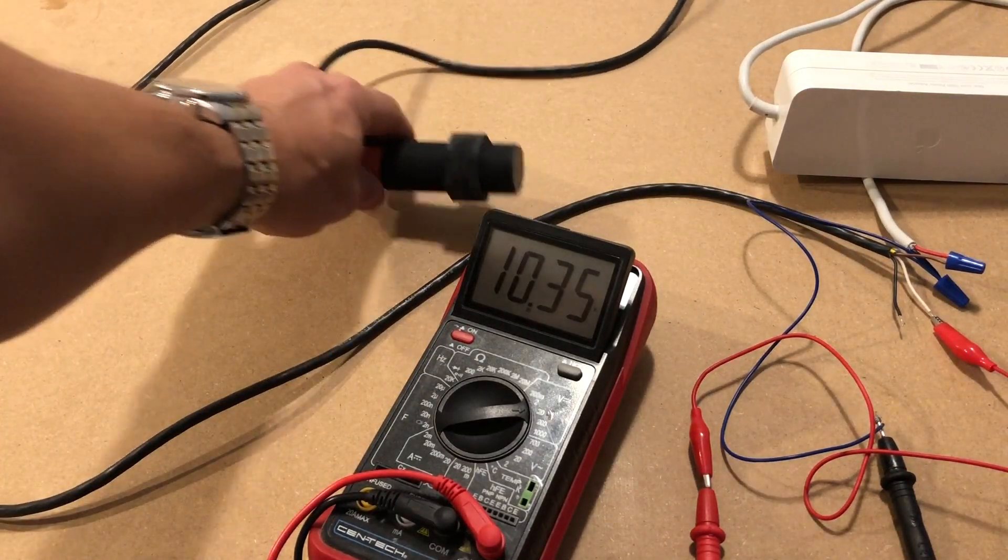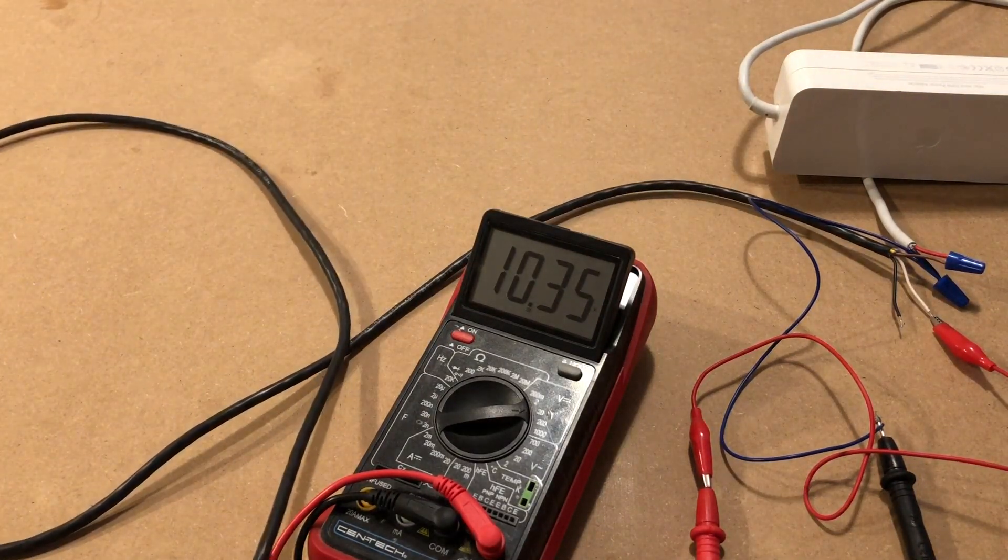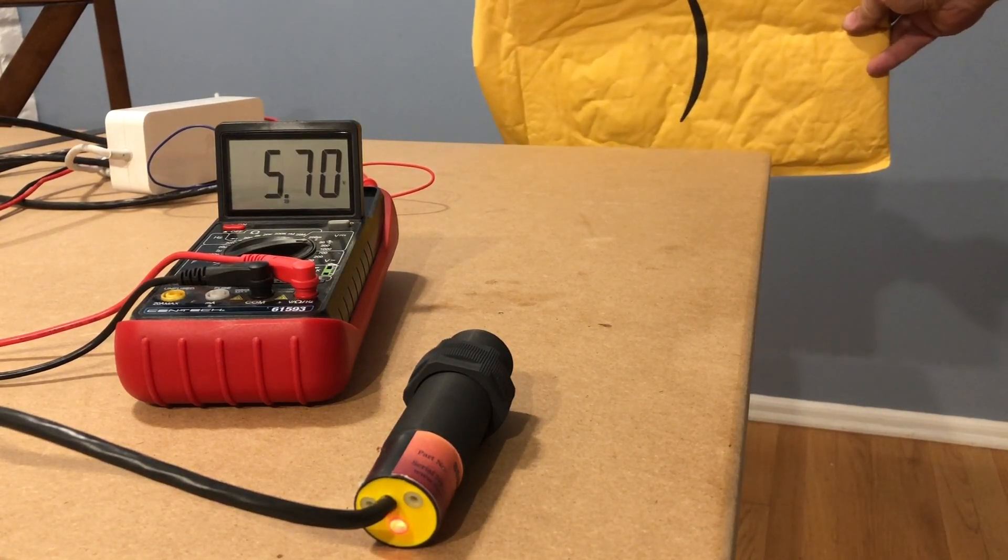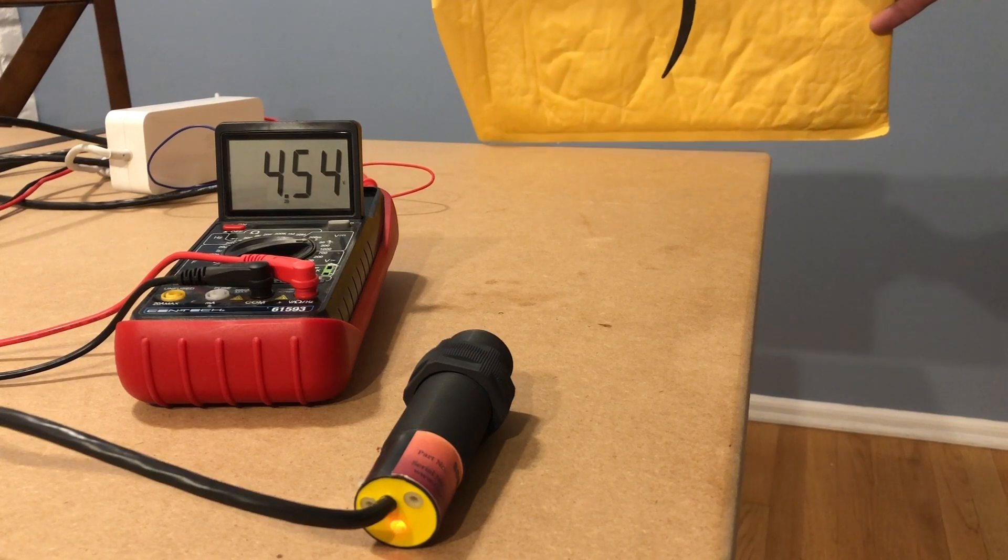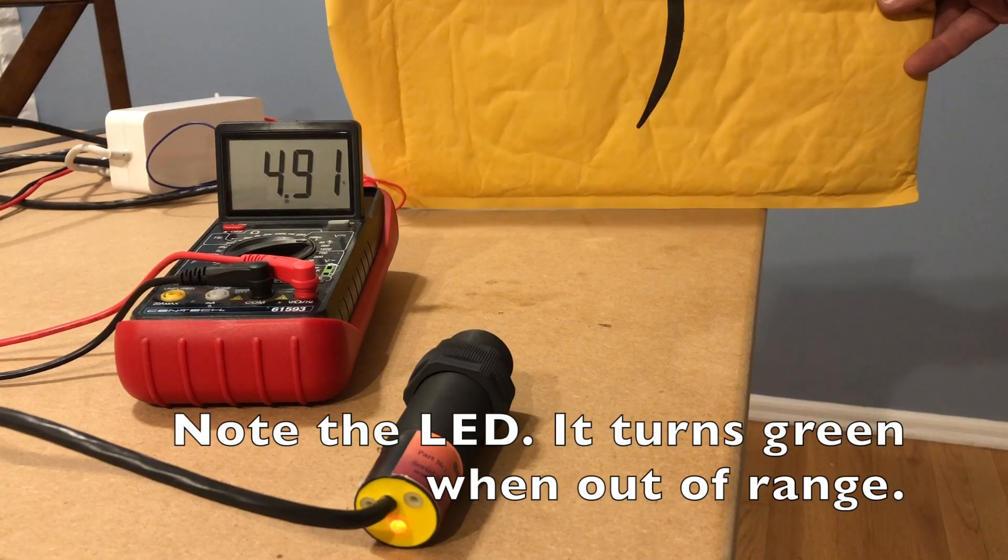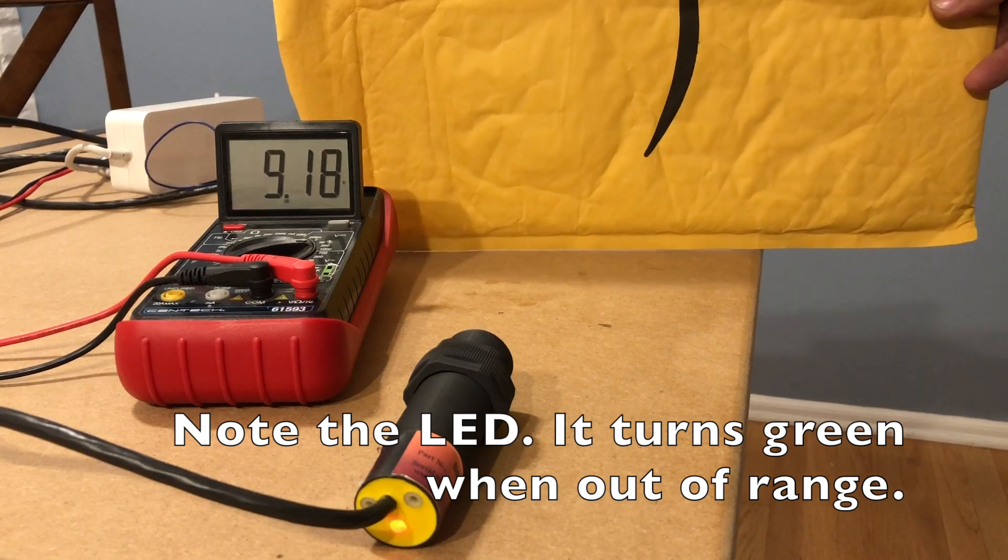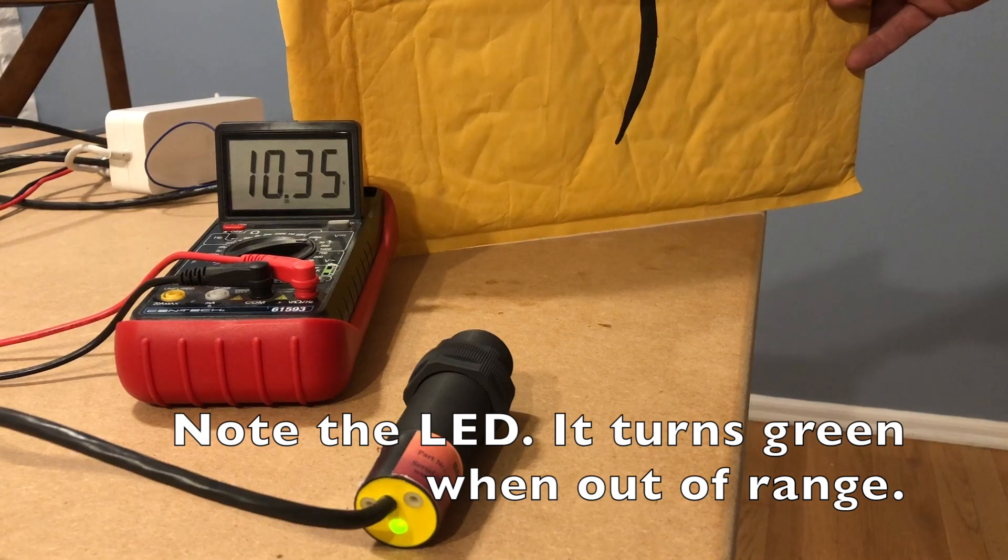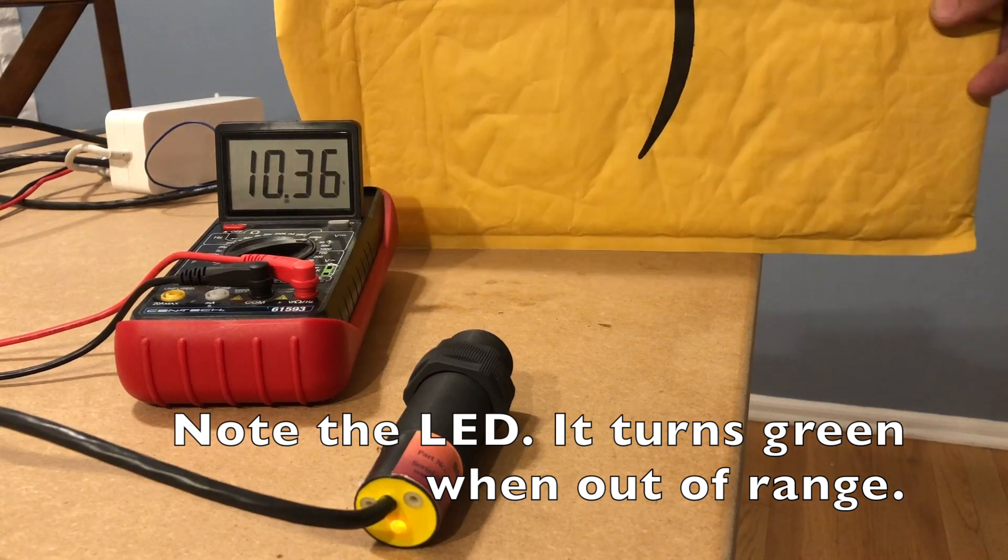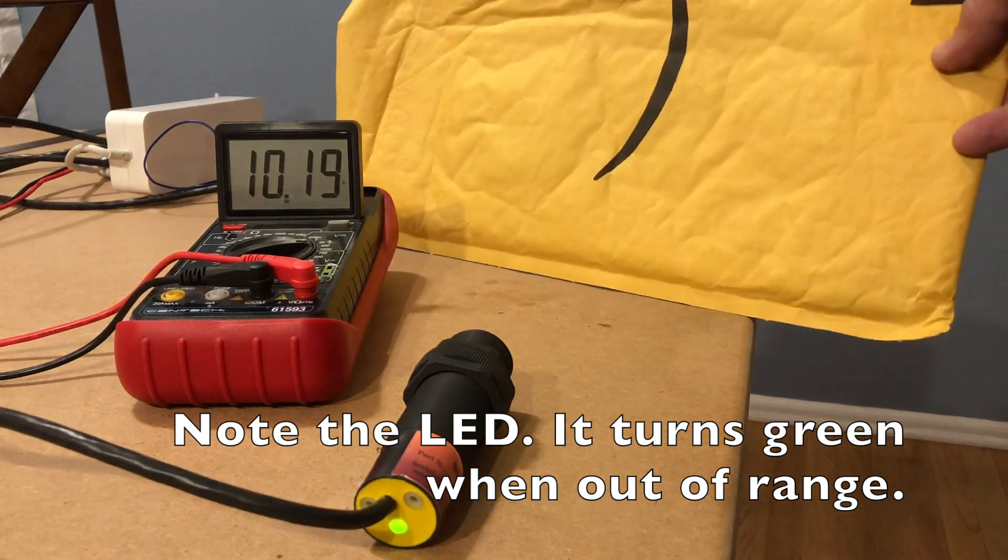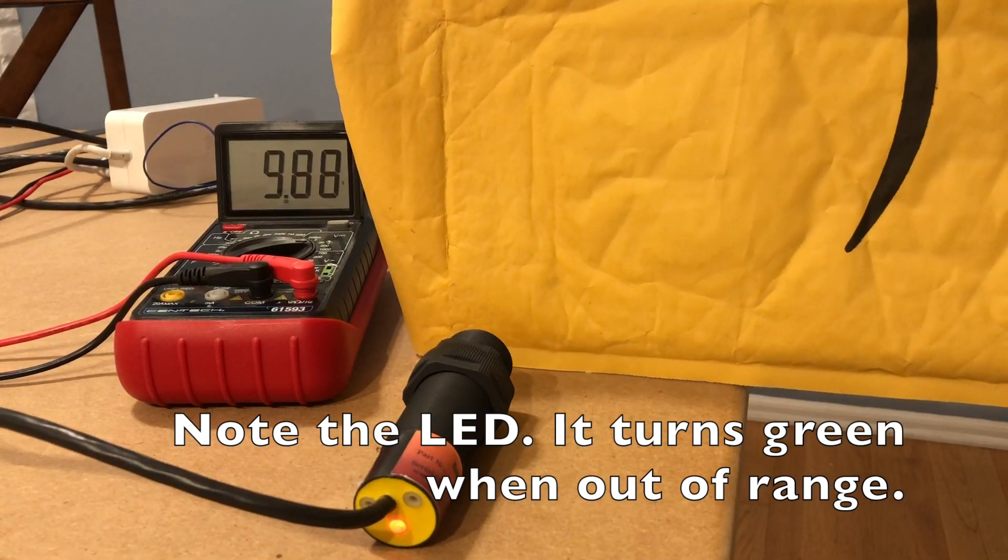Instantly we get an out of range reading displayed. As we move the object closer in and out, the signal value changes smoothly except for those moments when the beam is not reflected straight back into the sensor due to angle of the object surface or surface imperfections which become a bigger issue at closer ranges.